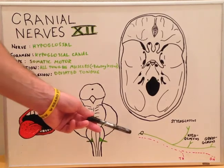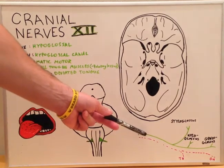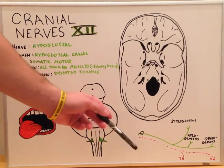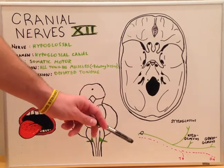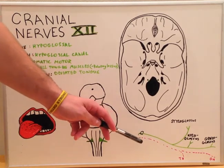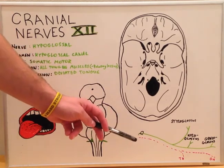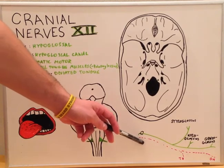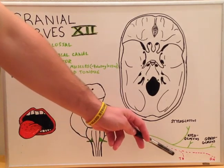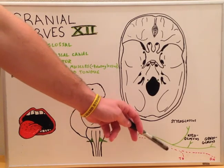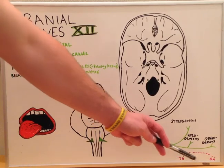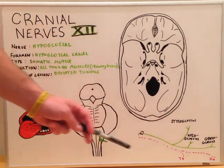As the hypoglossal nerve exits and becomes an extracranial nerve, the fibers of C1 and C2 of the cervical neck nerves ride alongside it — they do not join — where they also innervate muscles that depress and elevate the hyoid bone, the thyrohyoid and geniohyoid muscles.